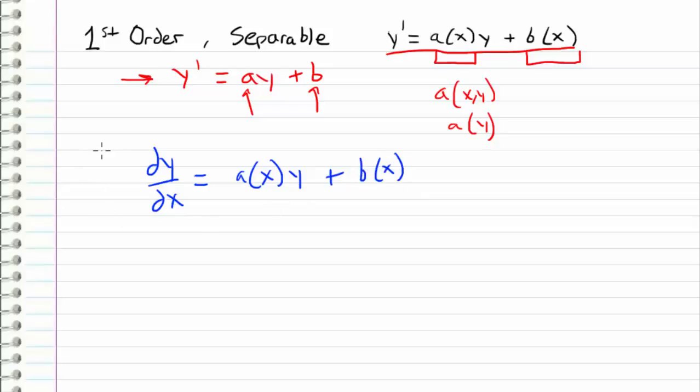If we have this form right here, then what we need to do is straight up integration. We put the x's and dx's on one side and we put the y's and dy's on the other side.